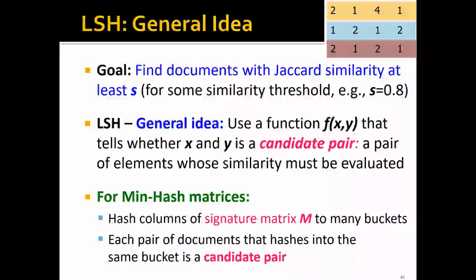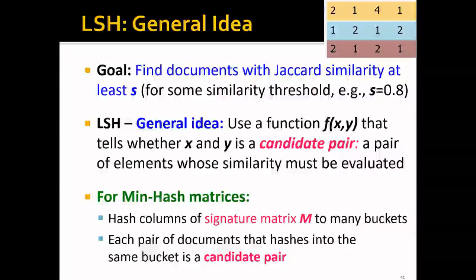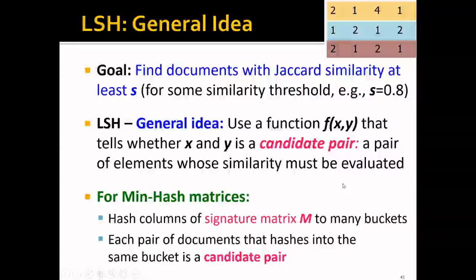If we start from the minhash matrix, we will first hash the columns of the matrix to many buckets. Each pair of documents that are hashed to the same bucket will be called a candidate pair.